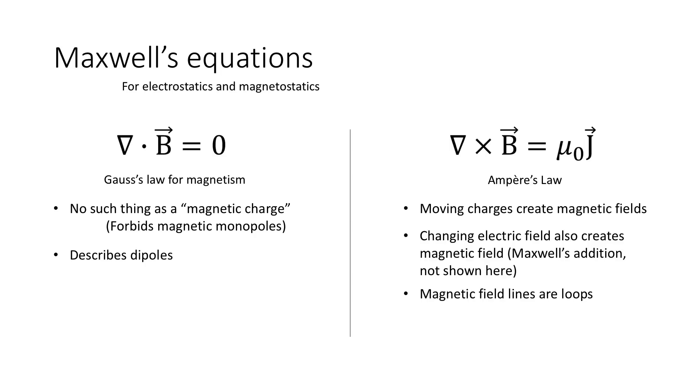On the right we have Ampere's law, which describes how a moving electric charge creates a magnetic field which curls in loops around the path of the electric current. There is also a neat addition by Maxwell which is not actually shown here, but it tells us that a change in the electric field produces a change in the magnetic field and vice versa. This actually describes light.